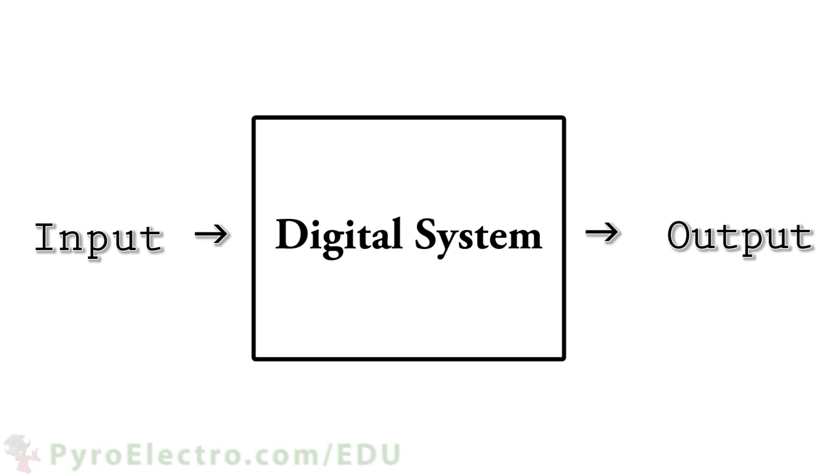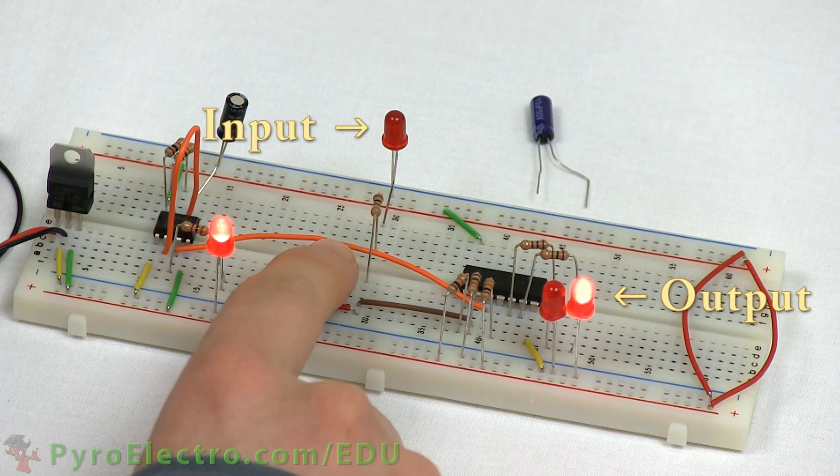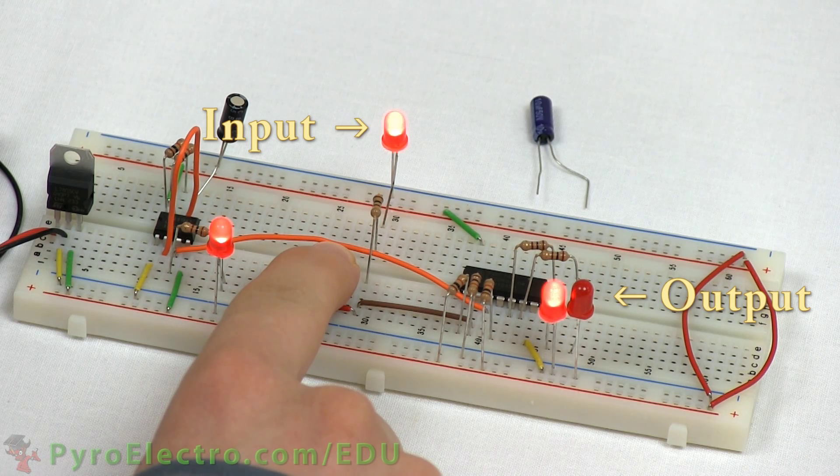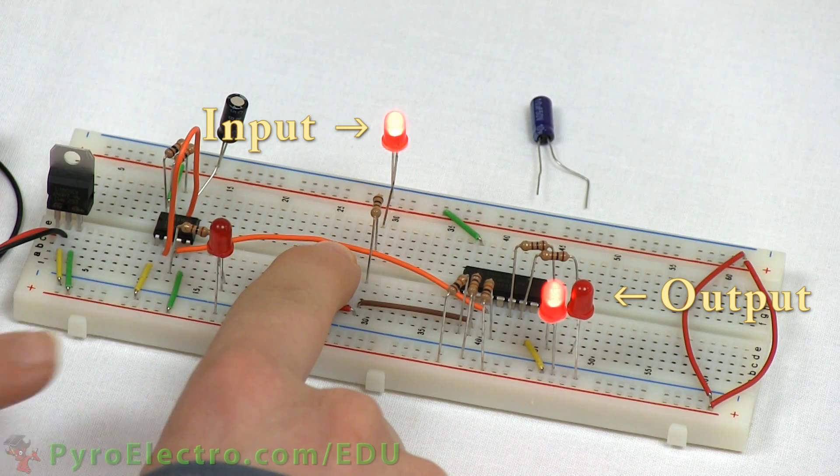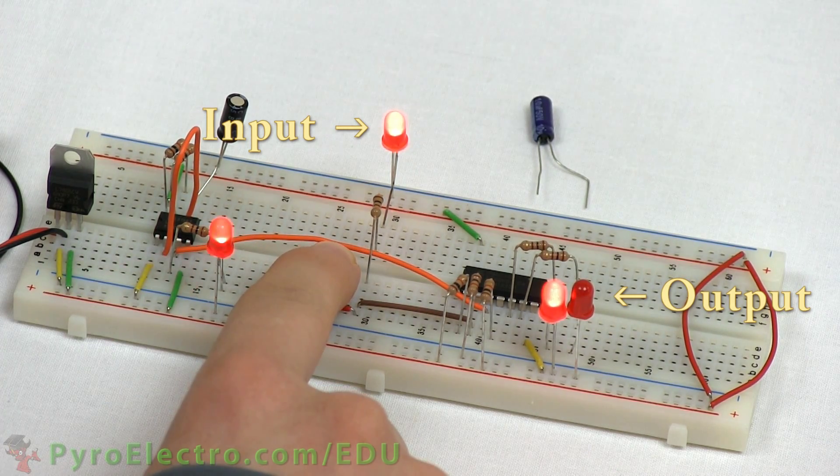We saw this idea at work in the Introduction to Digital Electronics course when we were introduced to D flip-flops. When we pressed a button, the D flip-flop registered it and set the output accordingly. Similarly, when we released the button, the D flip-flop again registered it and the output LED turned off.